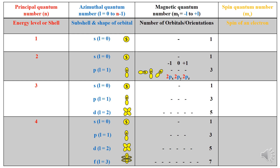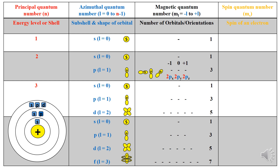The principal quantum number determines the energy level or shell of an electron. As the value of the principal quantum number increases, the energy level increases and the distance of the shell from the nucleus also increases. So 1 represents the first shell, 2 the second shell, and 3 the third shell — energy levels are numbered inside out, progressing away from the nucleus.